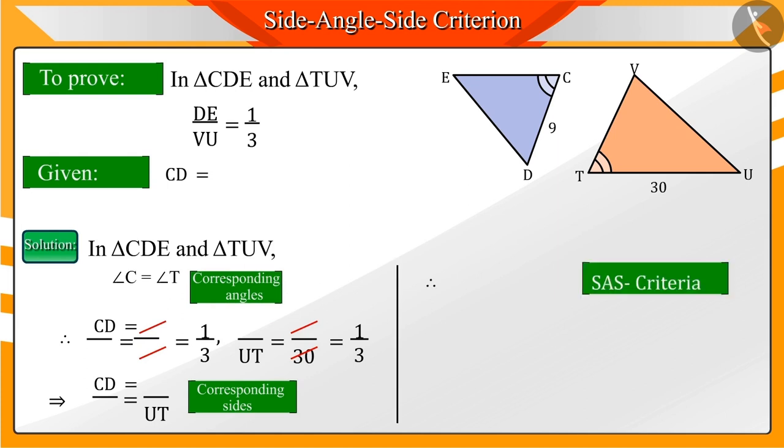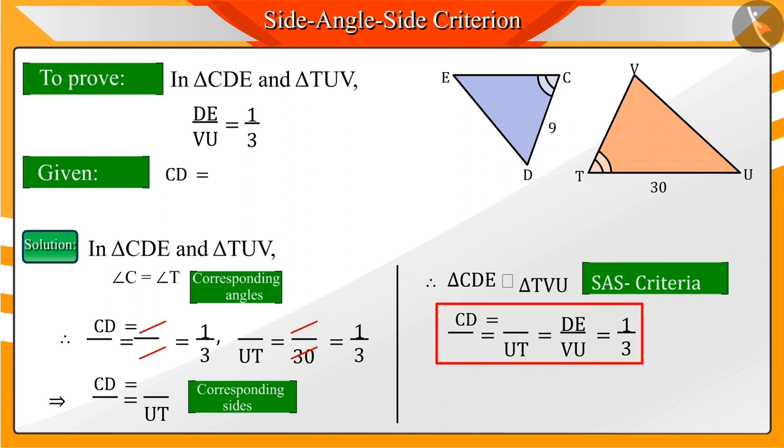Hence, by the SAS criteria, we can say that triangles CDE and TUV are similar to each other. We know that the corresponding sides of similar triangles are proportional. Hence, the ratio of the corresponding sides DE and VU is 1 by 3.